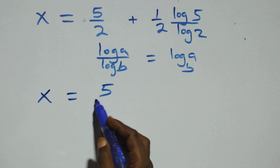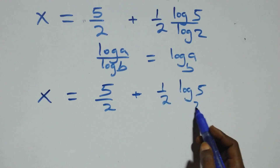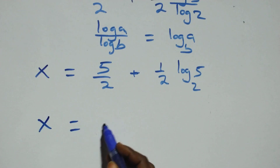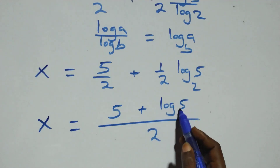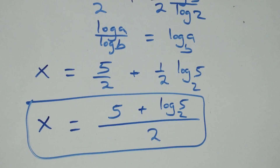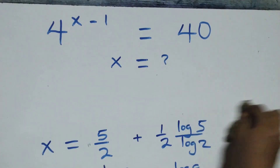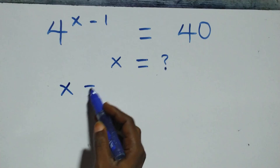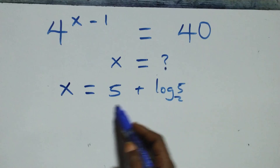We have x equals to 5 over 2 plus 1 over 2 times log_2(5). Then here, we bring this together as a fraction. We have x equals to 5 plus log_2(5), all over 2. That is the value of x. Then let's check here if this satisfies the given problem. We substitute the value of x, which is x equals to 5 plus log_2(5) all over 2.